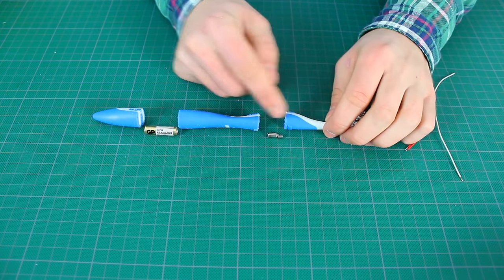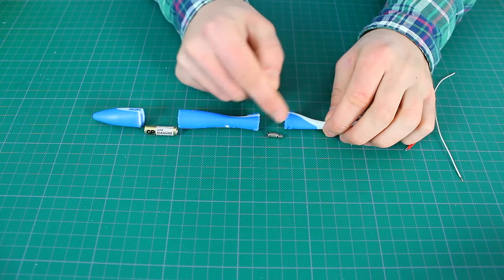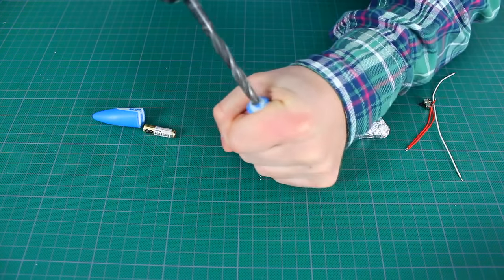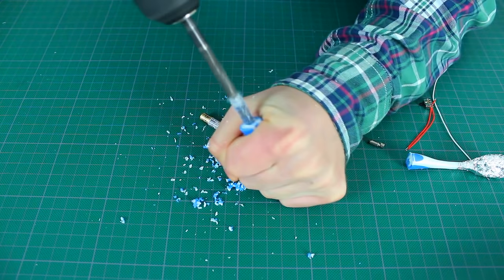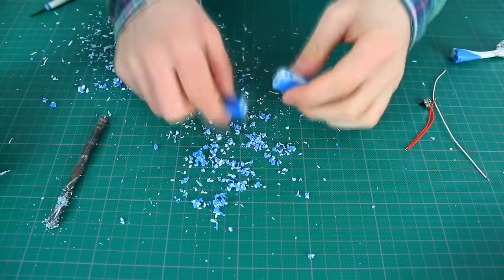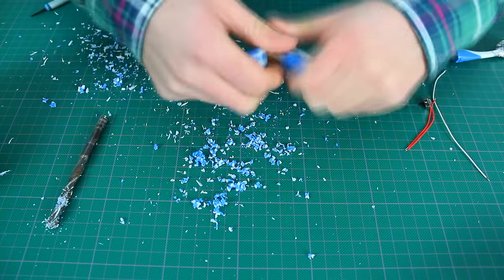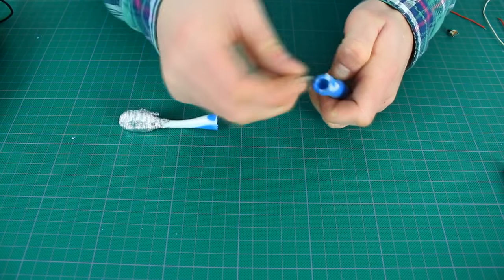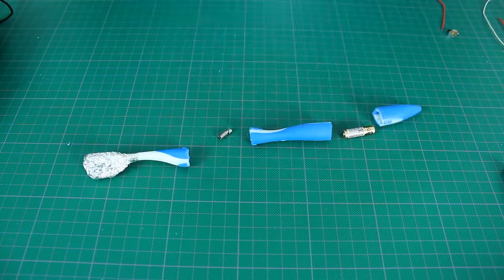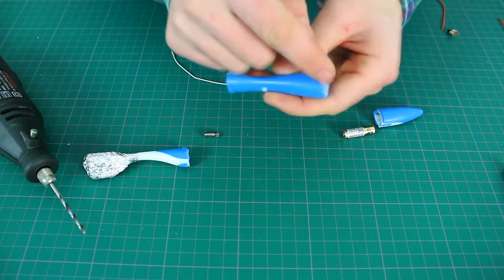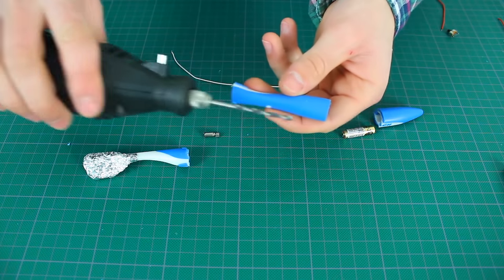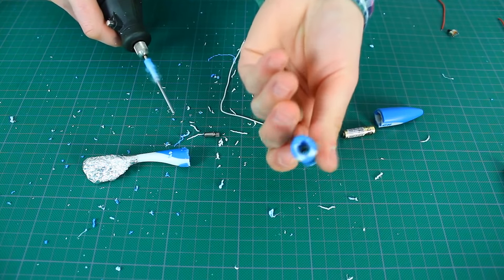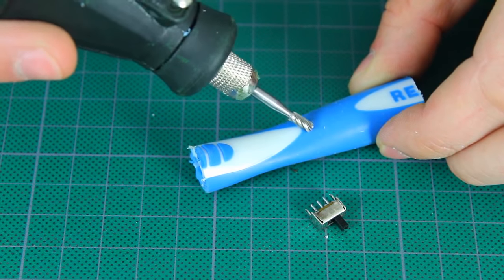Next, we need to make two cavities in the handle. One for the vibromotor in the upper parts and another one for the battery. Make a hole in the central parts of the handle for the wires and also make one for the switch.